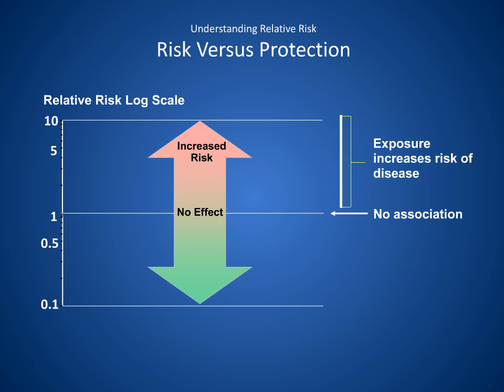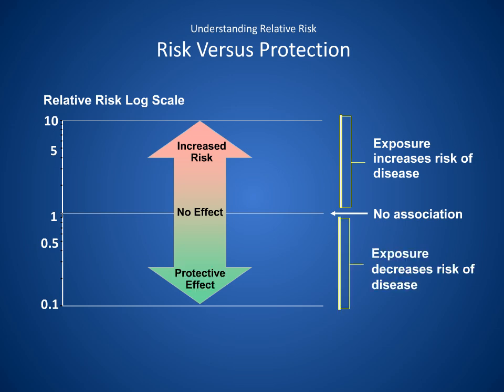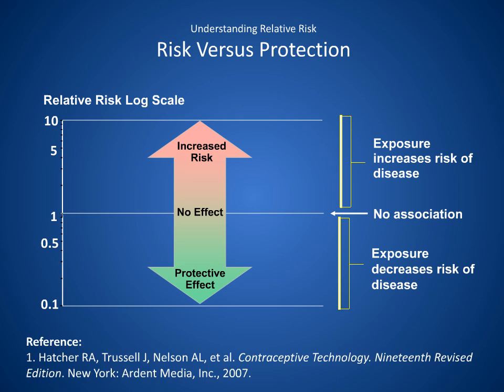Another situation occurs when the exposed group has 10 cases of condition X and the unexposed group has 20 cases of condition X. 10 divided by 20 equals 0.5. Any relative risk less than 1 means that exposure provides protection from developing condition X.